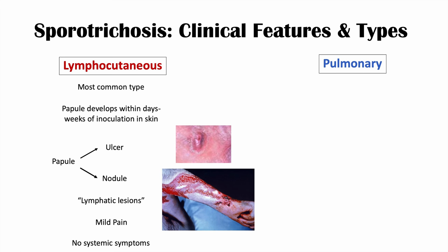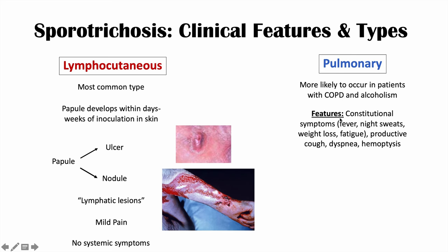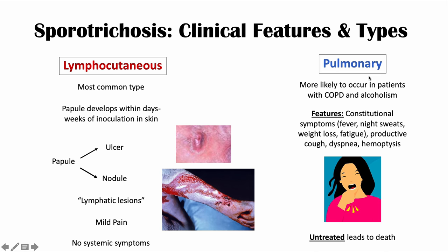Another subtype is pulmonary sporotrichosis, which occurs through inhalation of conidia and is more likely in patients with COPD and alcoholism. The features are reminiscent of tuberculosis, including constitutional symptoms like fever, night sweats, weight loss, and fatigue, as well as productive cough, dyspnea, and hemoptysis. It can appear to look like either tuberculosis or a type of lung cancer. If left untreated, pulmonary sporotrichosis can lead to death. This subtype is more difficult to diagnose than the lymphocutaneous form.